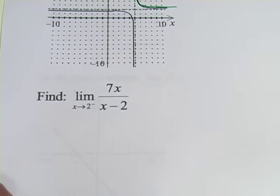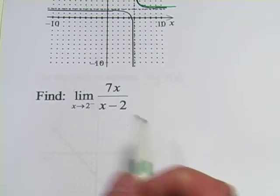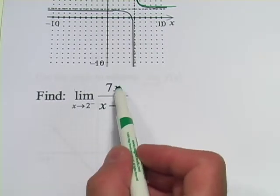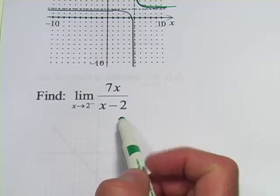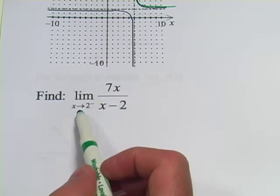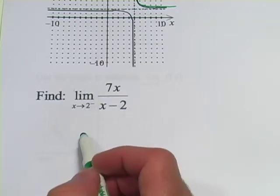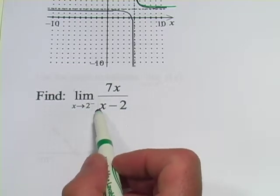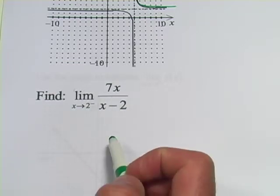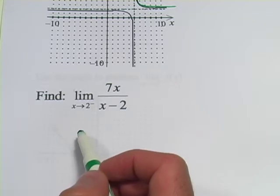Alright. Now, this last one looks a little bit trickier because we don't have a graph, and we want the limit of this function, 7x over x minus 2, as x approaches 2 from the left, from the negative side of the graph. So, how are we going to do this? We can't plug in 2 because that puts a 0 in the denominator. We don't have a graph to read this from.